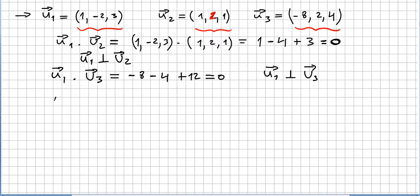What about u2, u3? Well, it's more or less obvious. So we get that u2, u3, 1 times minus 8, minus 8, 2 times 2, 4, and 1 times 4, 4. So we are getting 0.